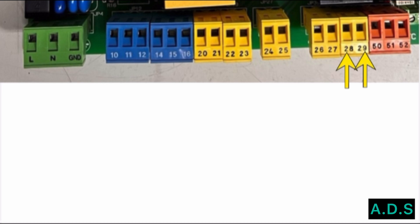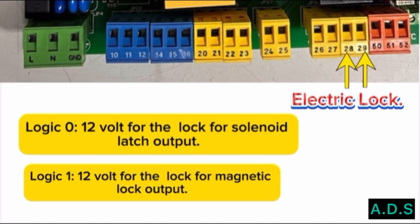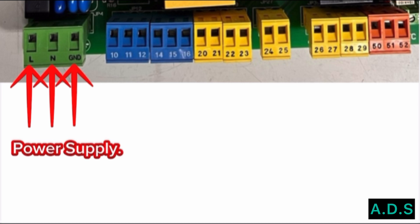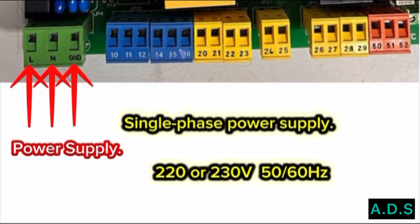Terminals 28 and 29 — electric lock output. Logic 0: 12 volt for the lock — solenoid latch output. Logic 1: 12 volt for the lock — magnetic lock output. Terminals L, N, and GND — the power supply block for the main control. Single-phase power supply: 220 or 230 volt, 50/60 Hz.